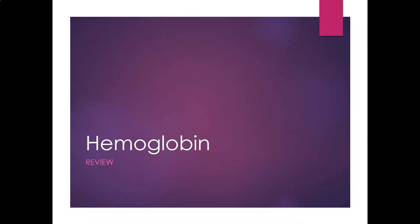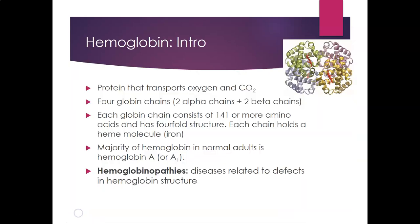This is a clinical chemistry review on hemoglobin. Hemoglobin is a protein that transports oxygen on the heme portion, and carbon dioxide can bind to the globin portion. Hemoglobin is made of four globin chains—two alpha chains and two beta chains—and each globin chain consists of 141 or more amino acids and has a quaternary protein structure.